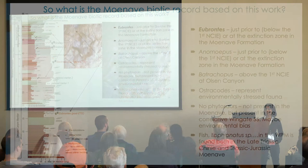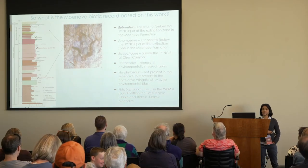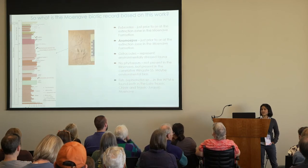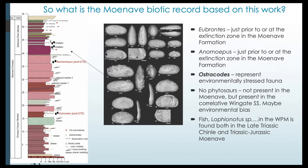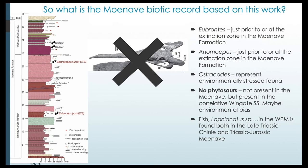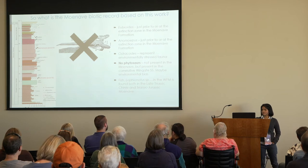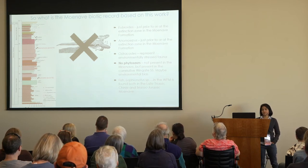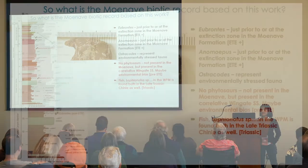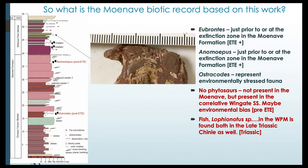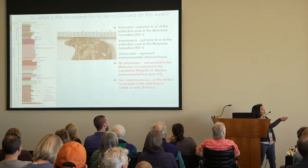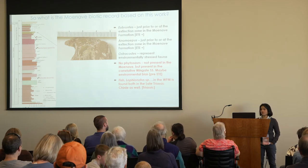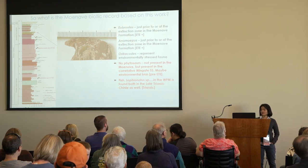Looking at the Moenave biotic record: we have Eubrontes as far down as the middle part of the Dinosaur Canyon Member — a post-end-Triassic extinction taxon. We have Anomoepus in the upper Dinosaur Canyon Member, but also environmentally stressed ostracods that tend to exist in the Triassic. We don't have any phytosaurs yet in the Moenave Formation, though they're known from correlative units like the Wingate Sandstone, suggesting an environmental bias. We also have the fish Lophionotus — common in the Triassic-aged Chinle Formation — appearing in the Whitmore Point Member as well.